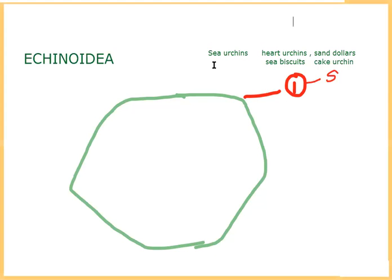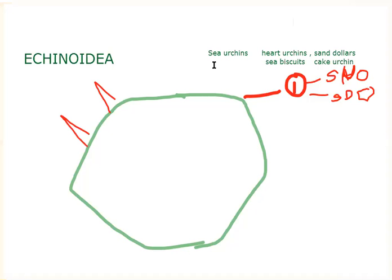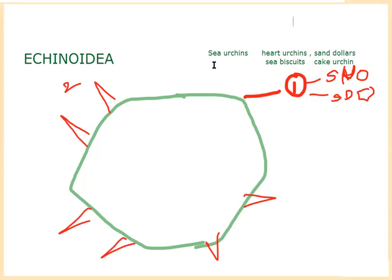Body is ovoid or discoid — that is the first point to be remembered. The second point: the body is covered with movable spines.